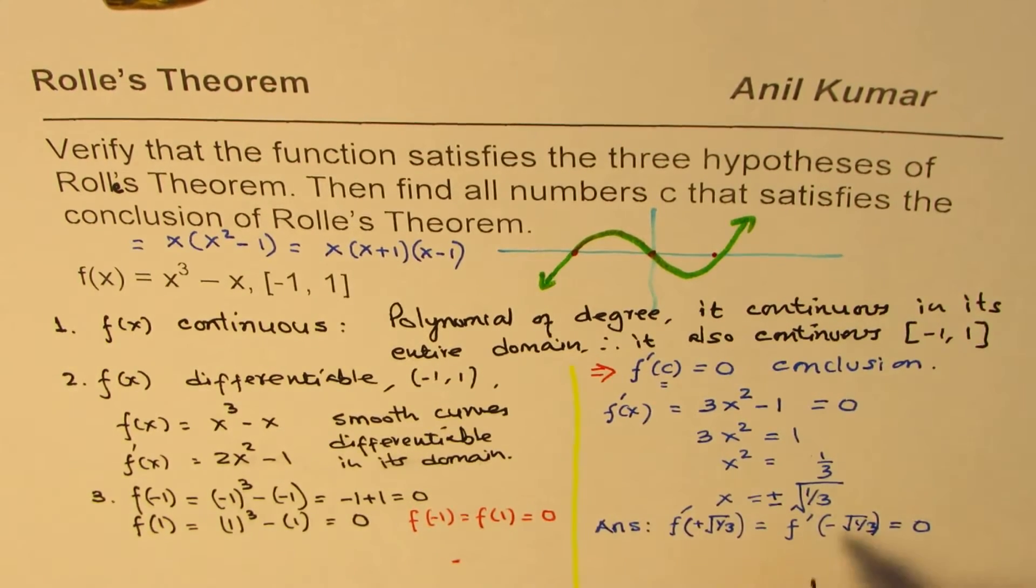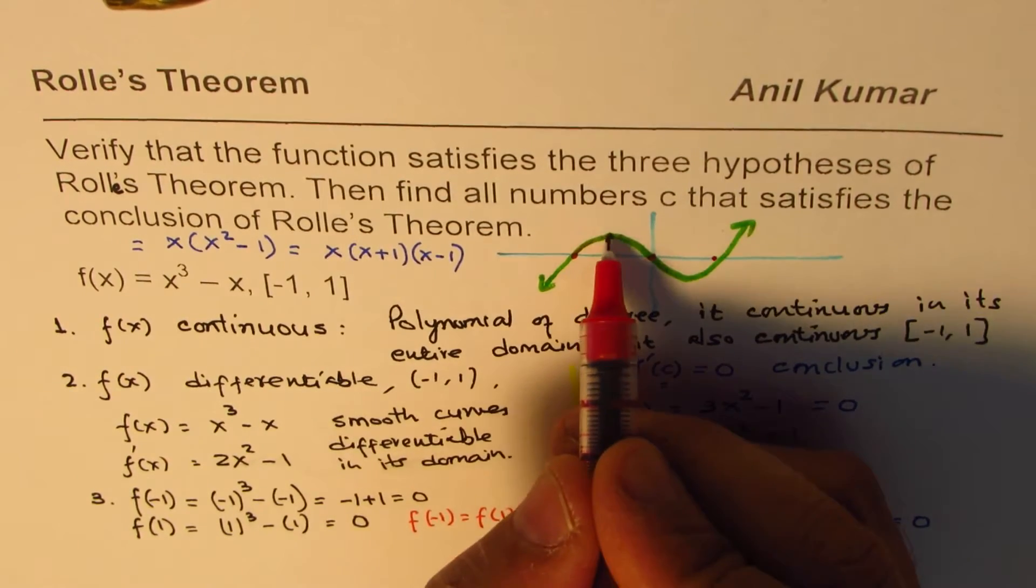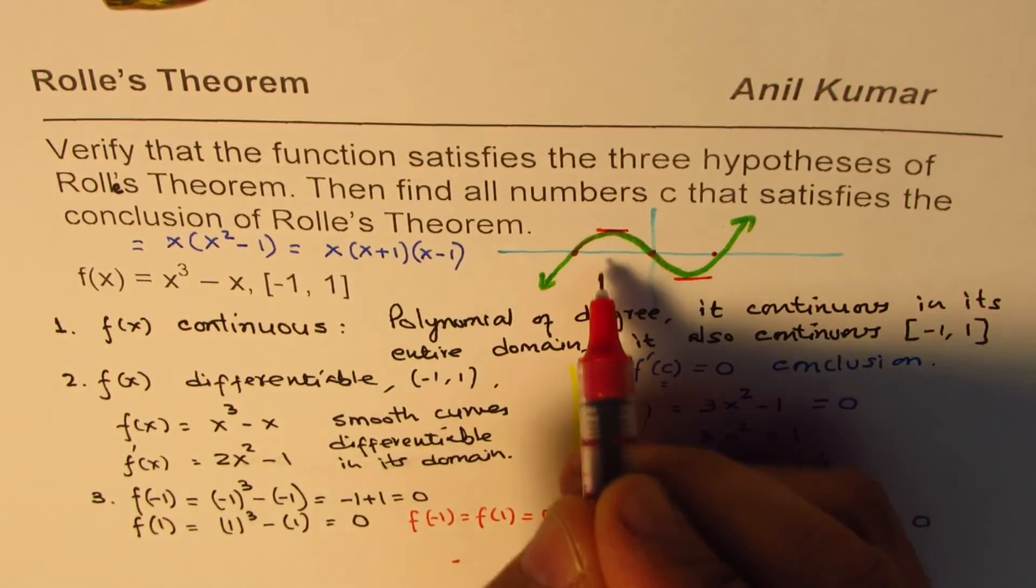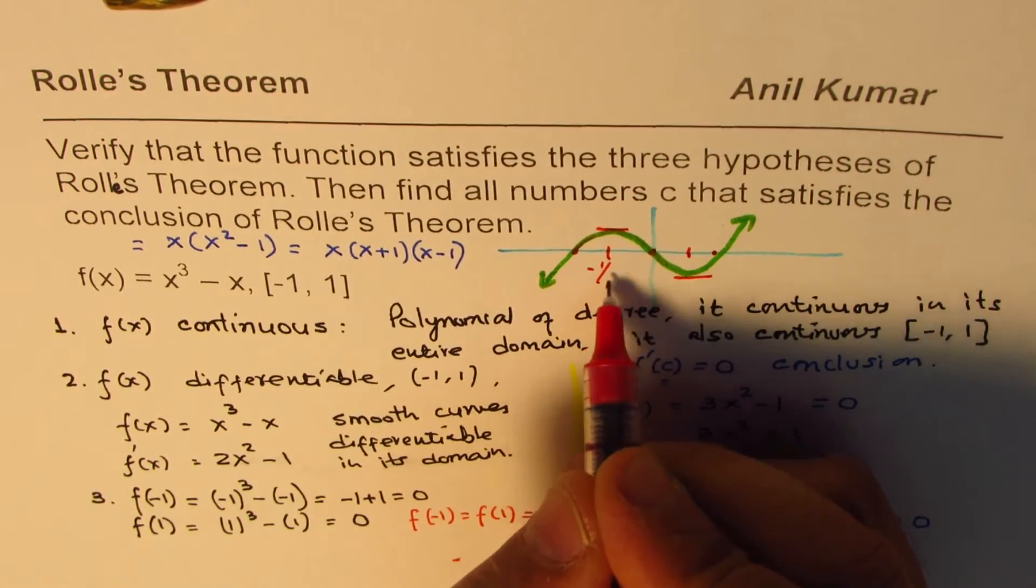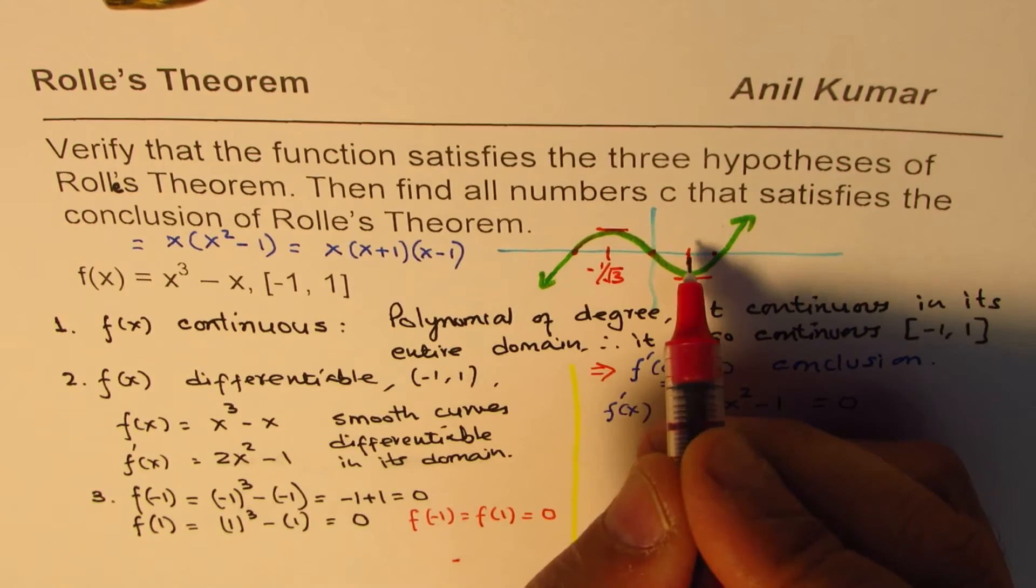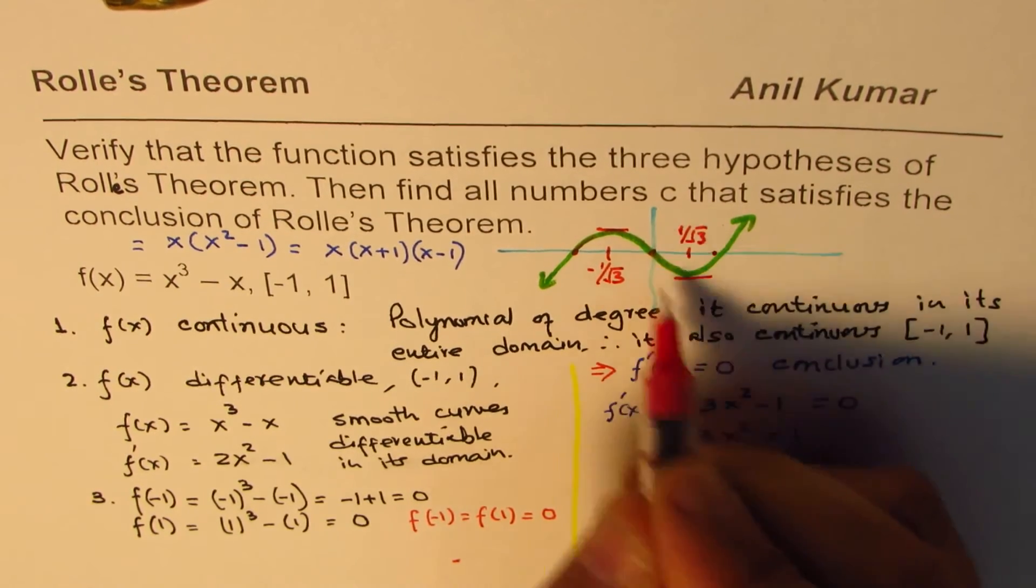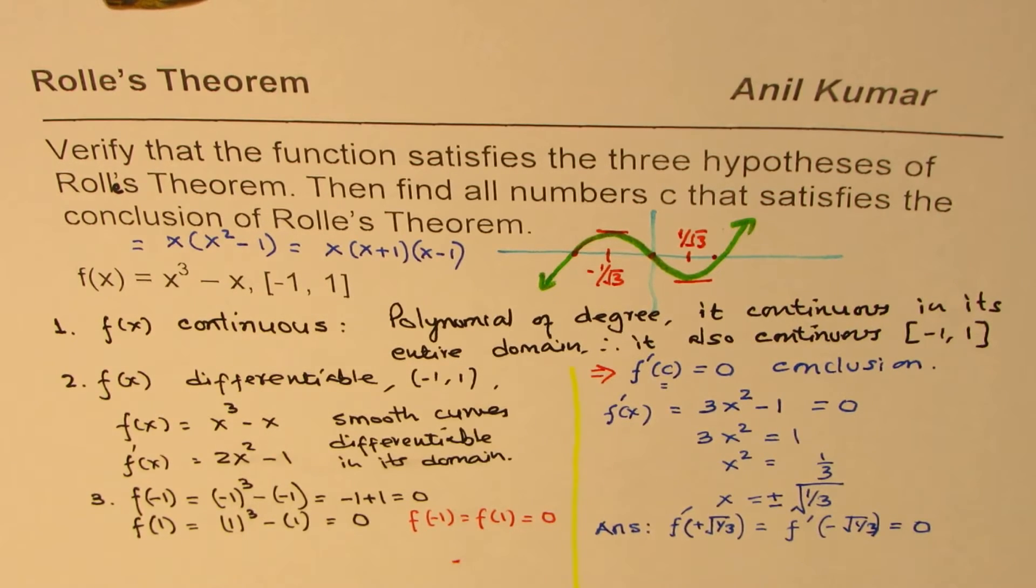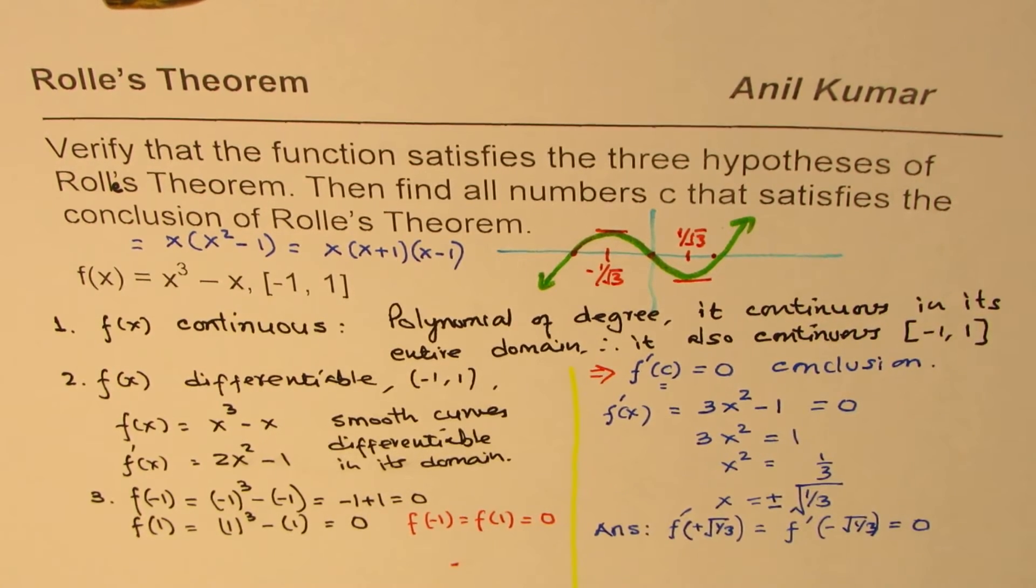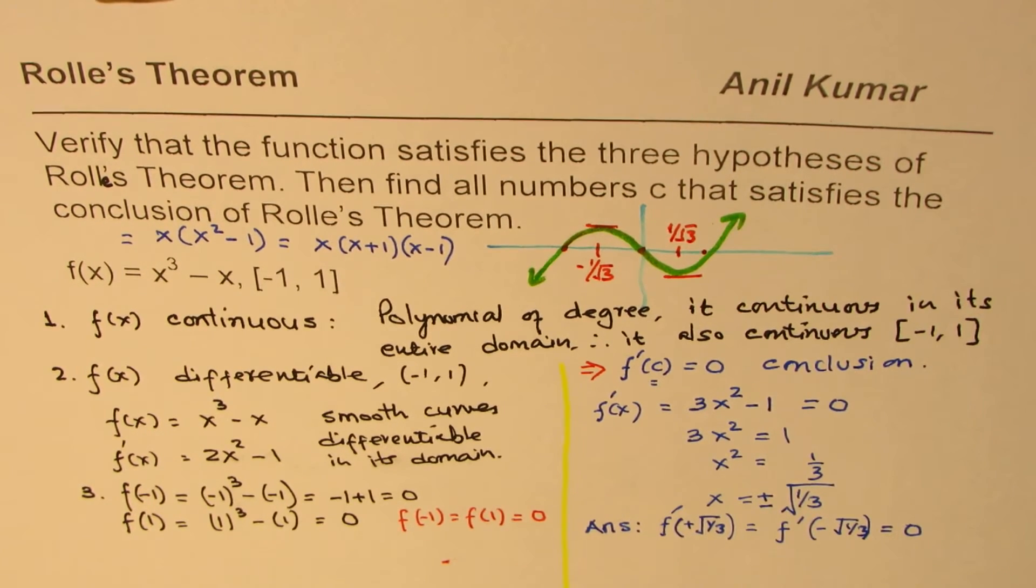And these two points which we found just now are really these horizontal tangent points which are at -1/√3 and +1/√3. So that is how we can show the solution graphically also. I hope that helps you to understand what Rolle's theorem is and how we can apply it.